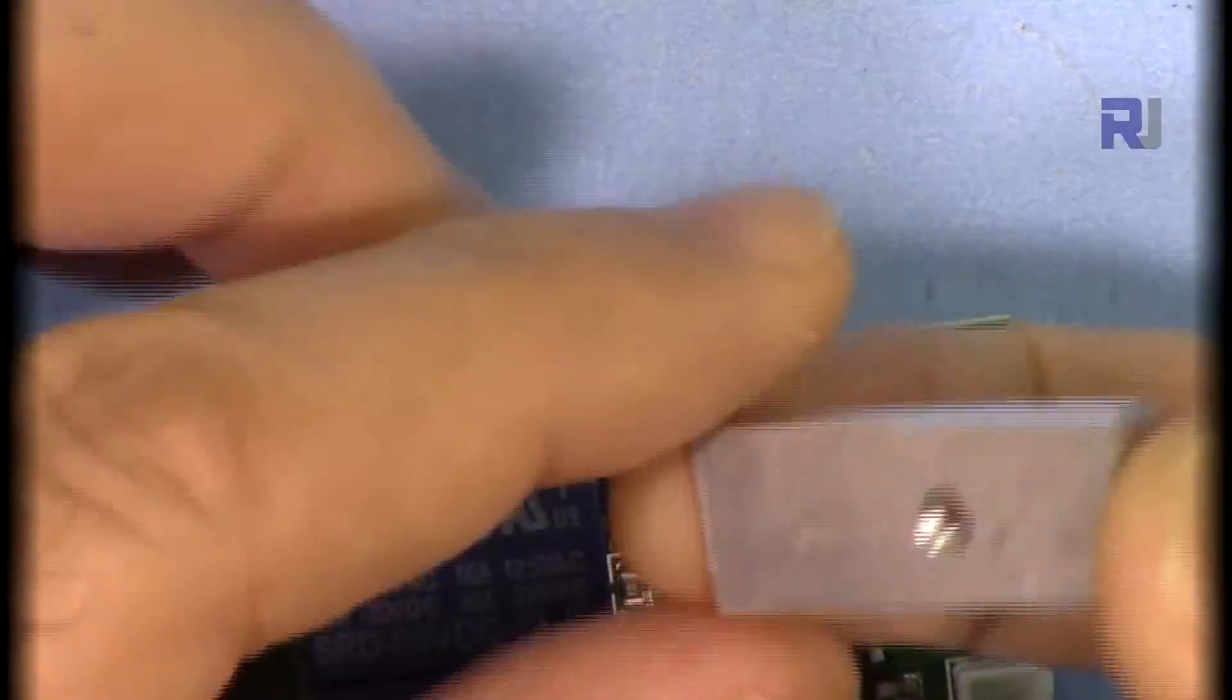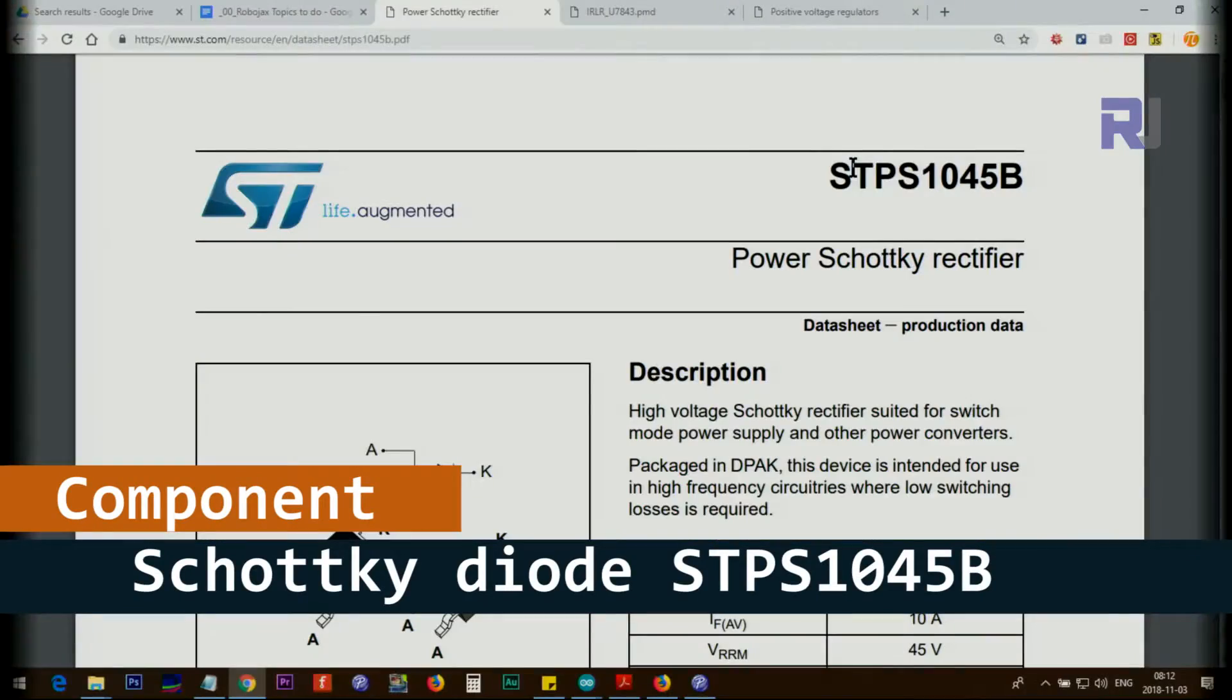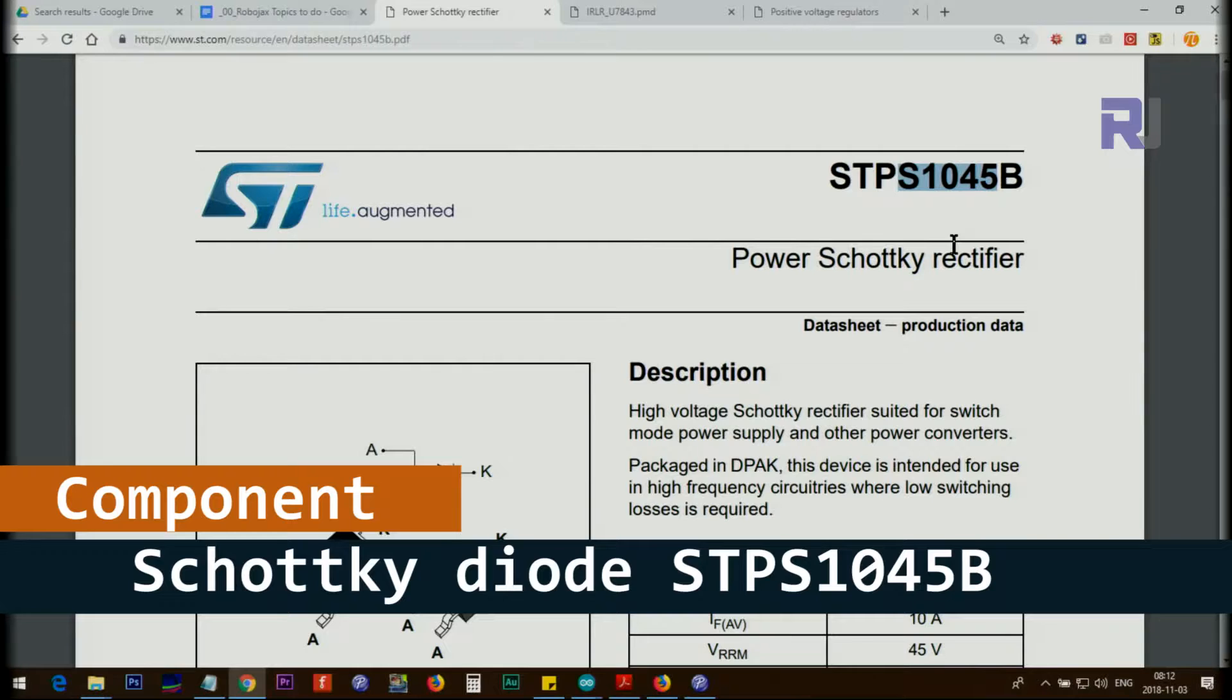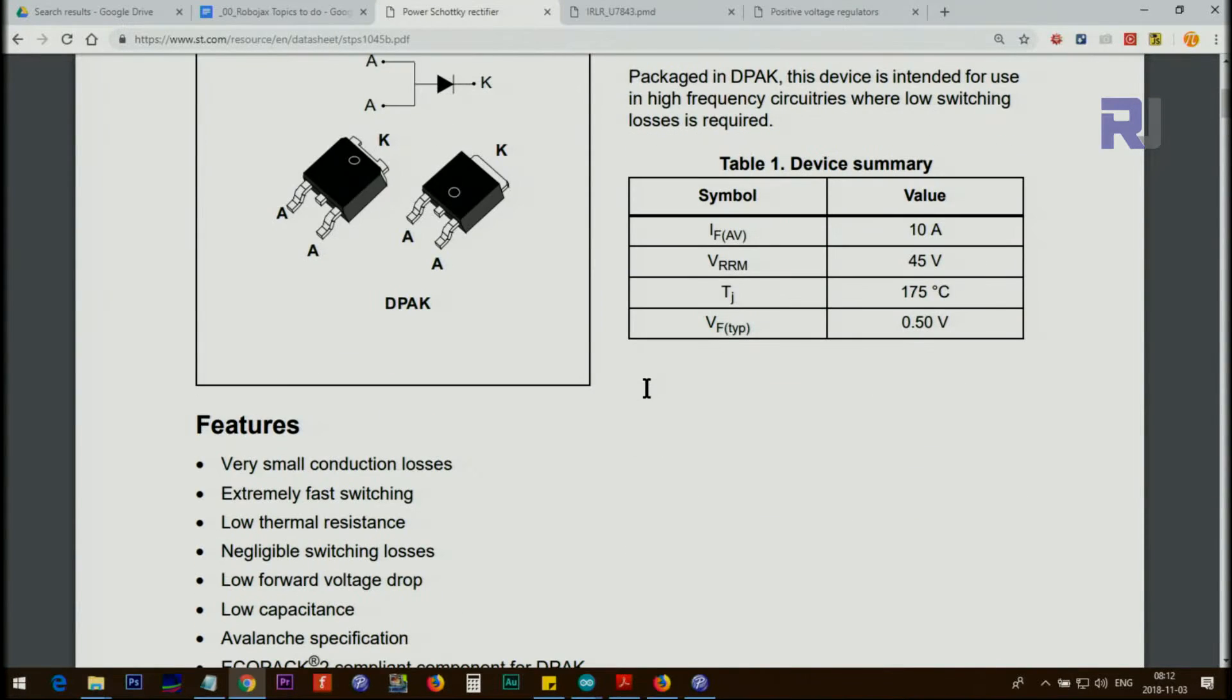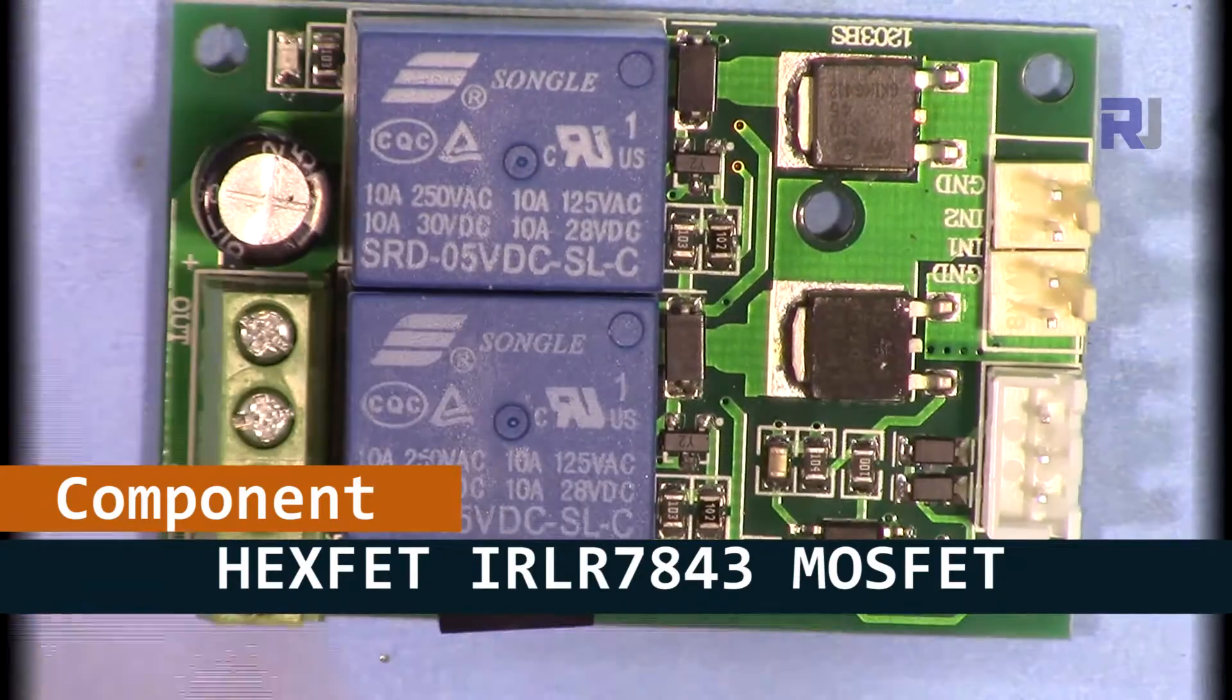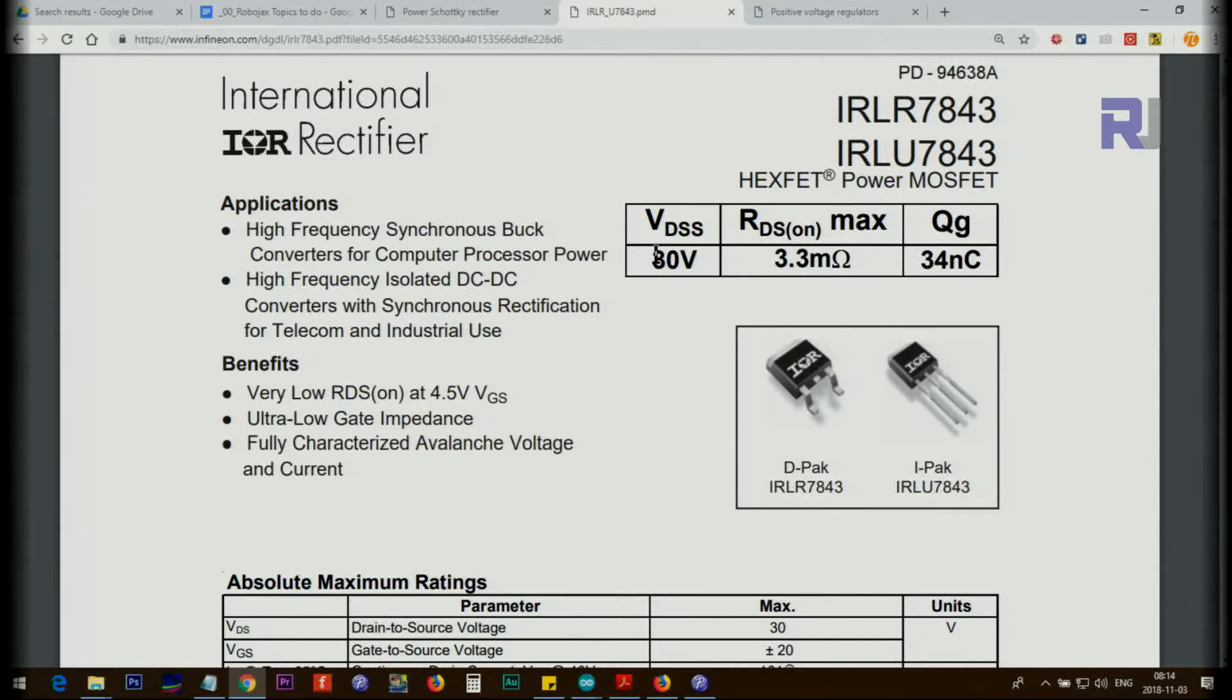They did not put any heat transfer compound so you have to put it. This one is a Schottky diode, STP F1045. The job of this diode is to protect from spike of the inductive load. Then we have this IRF7843 MOSFET, this is from International Rectifier. The maximum voltage drain source of this can handle is 30 volts, so your motor cannot be above 30 volts.